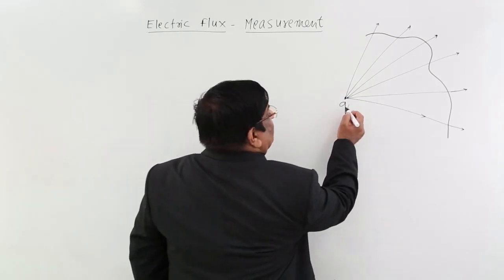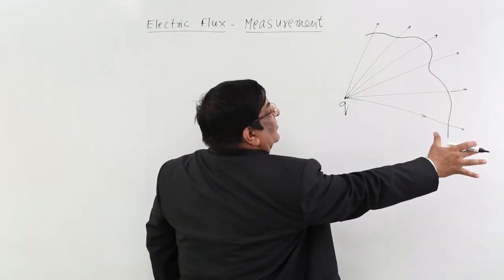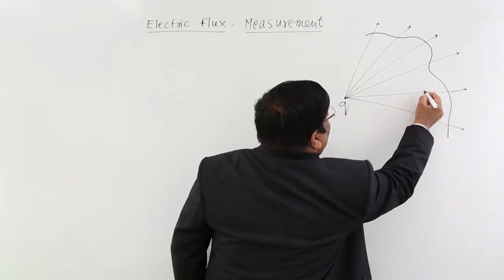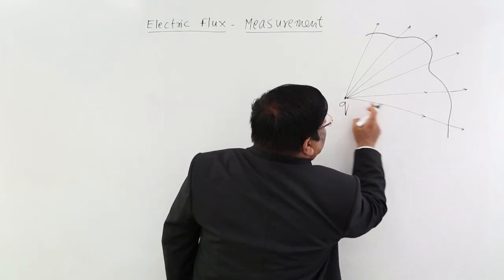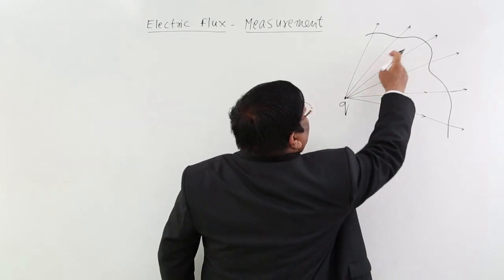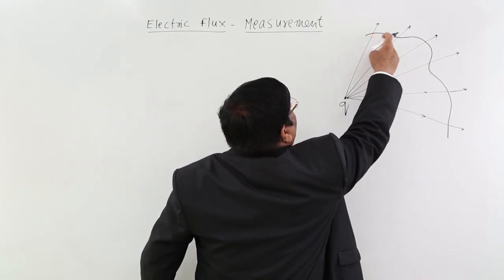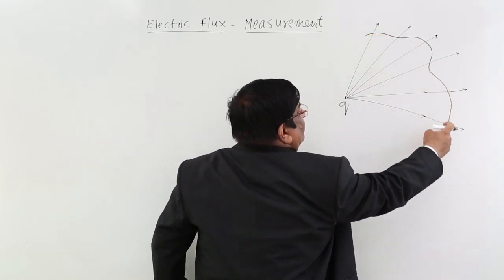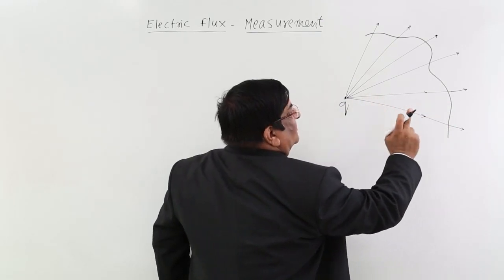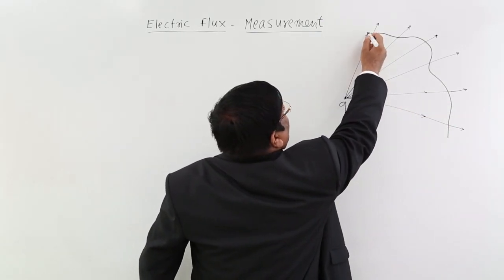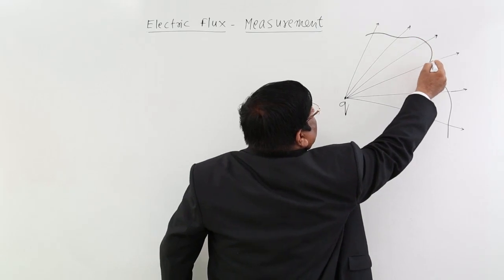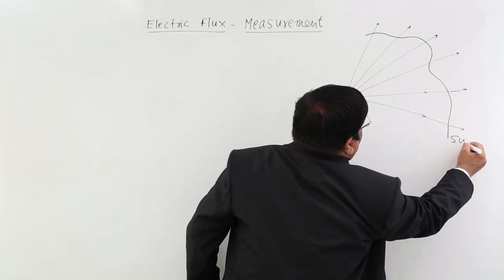This is a charge. It is creating electric field all around it and these lines represent direction of electric field at different distances. So electric field magnitude at all these points are different, the direction is different. Now this dark line you see, this line, this represents a surface.